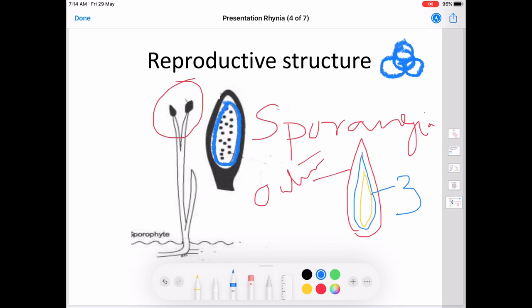So the plant is considered as sporophytic due to the presence of the tetrahedral spores. This is all about the reproductive structure in the case of Rhynia. Thank you all.